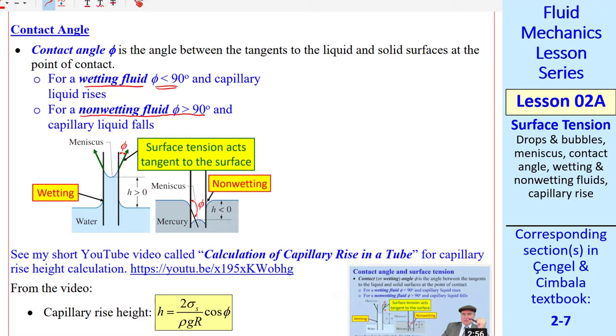For a non-wetting fluid, phi is greater than 90 degrees, as would be the case for something like mercury. Notice that the meniscus is also upside down compared to the water case, the wetting fluid, where the meniscus is like this. I also drew a meniscus on the other side of the tube. If you don't have a tube, you still have like a half of meniscus here, and then it levels off. The upside down meniscus is also visible on the outside of the tube, as illustrated here.